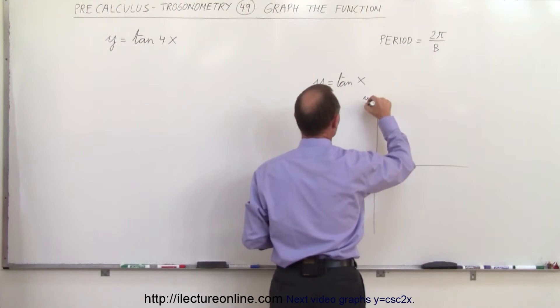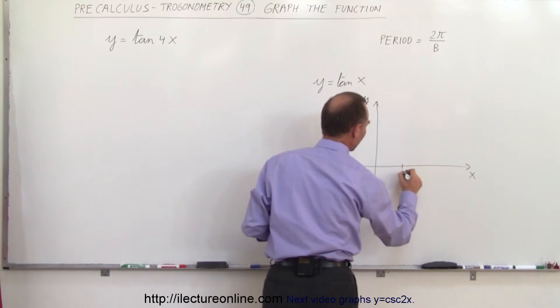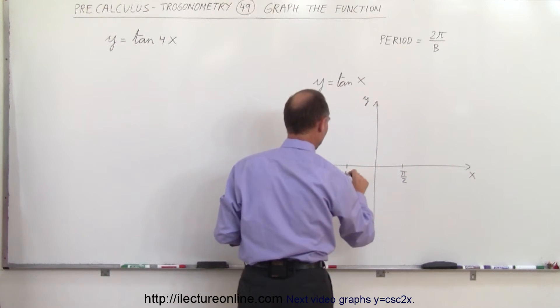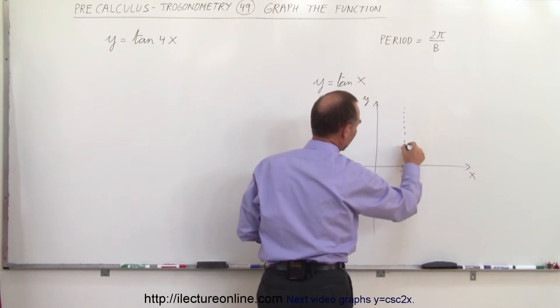So we have the y-axis here, we have the x-axis here, and at plus one half pi and at minus one half pi, pi over 2, those will be what we call the limiting or asymptotic lines.